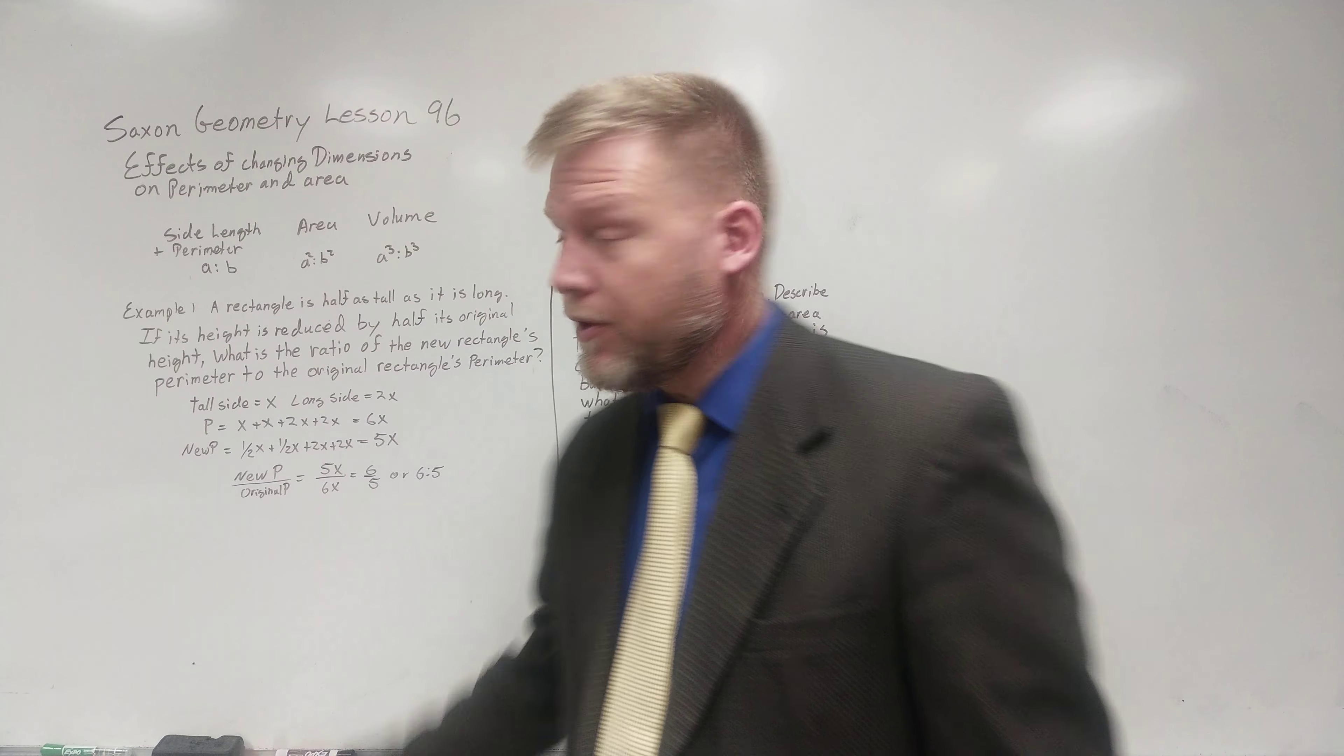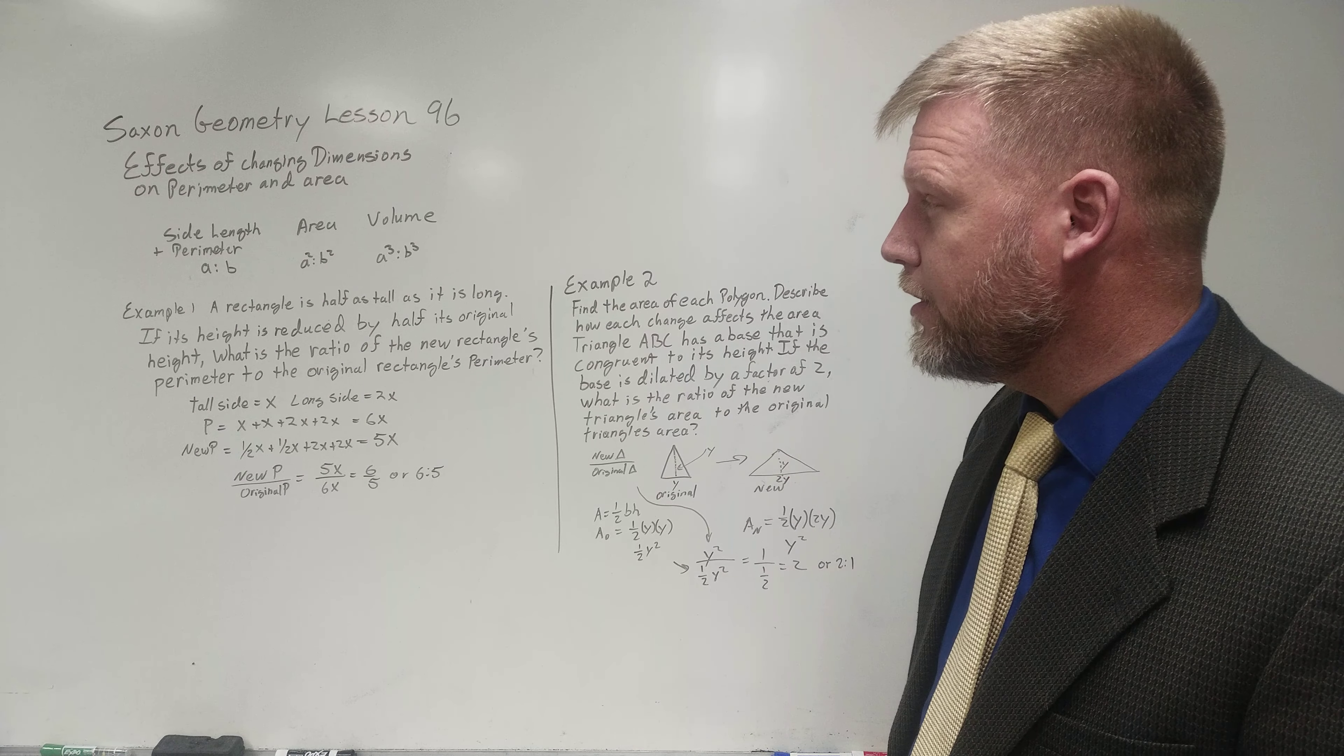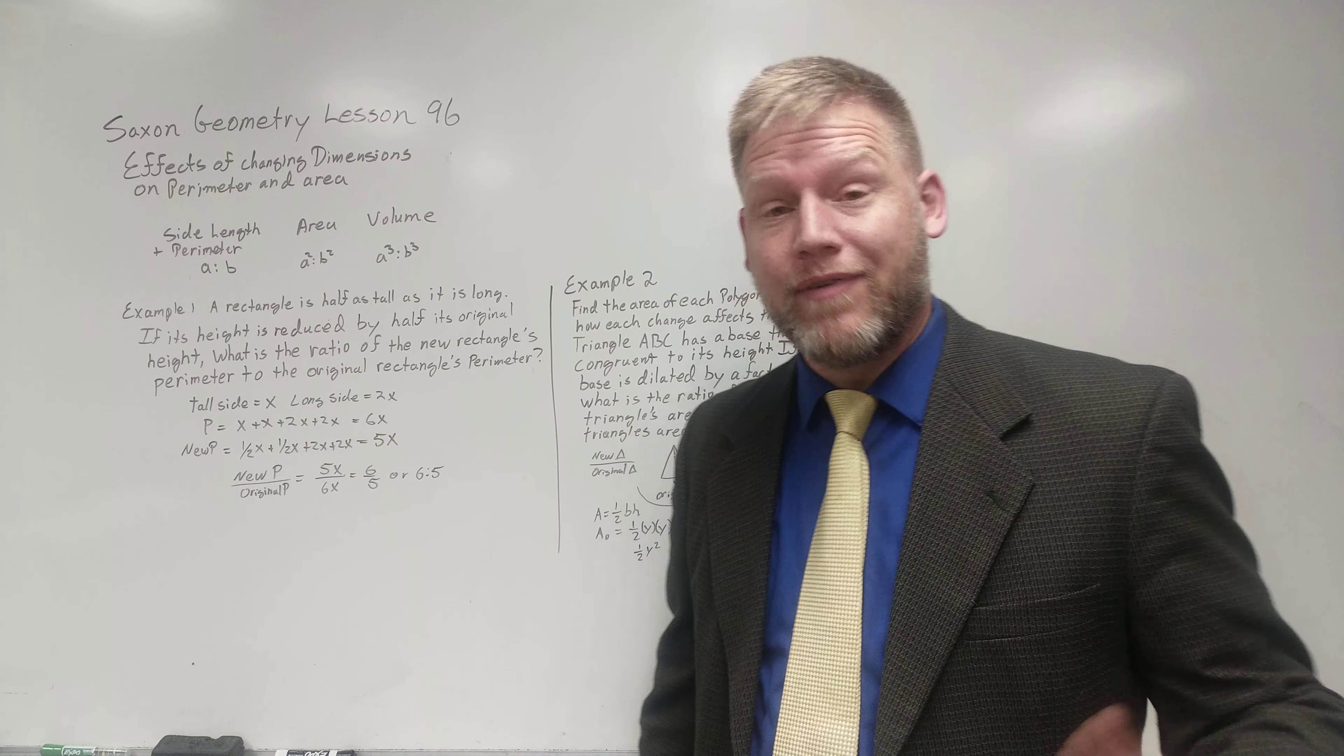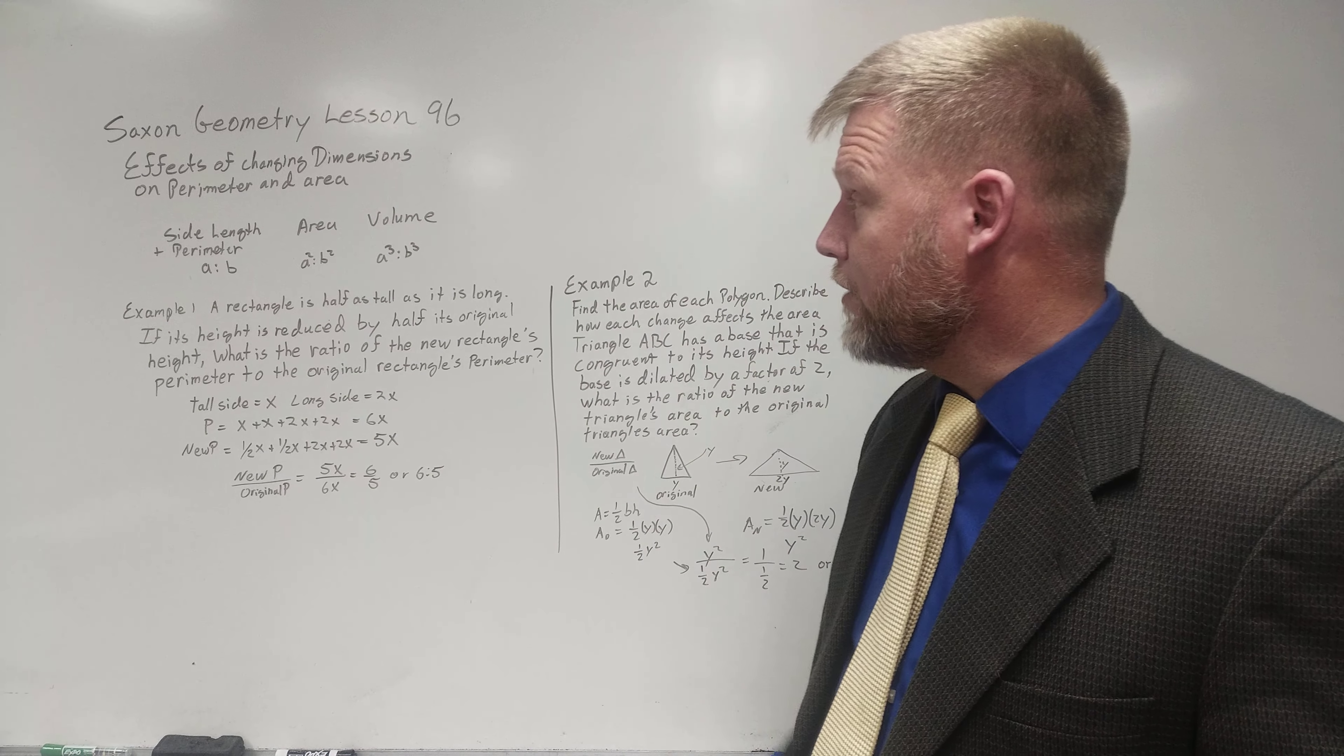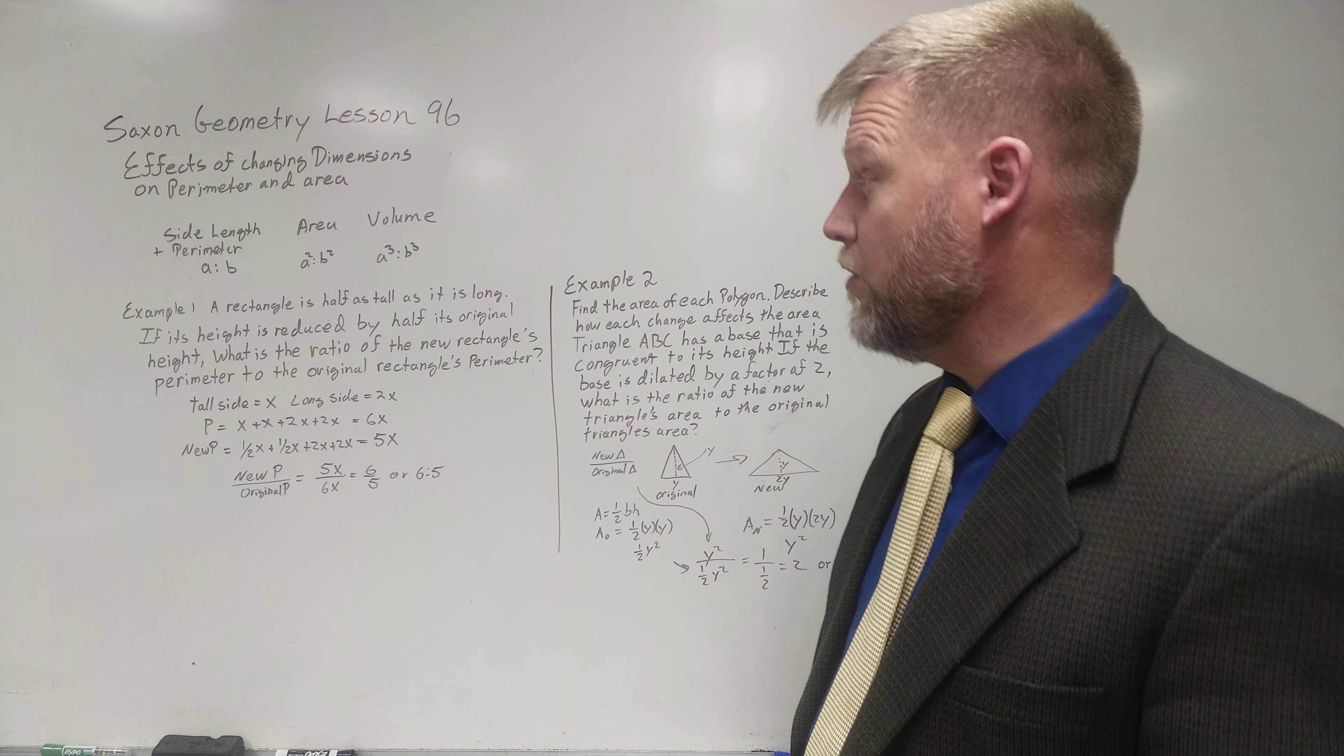So a couple of things we have to recall here, and if you are noticing I've put up here a couple of things. Side length and perimeter have a scale factor, a ratio of a to b. But if the scale factor, if I'm talking about area, it's a squared to b squared. And if I'm talking about volume, it's a cubed to b cubed.